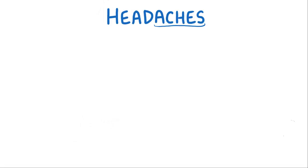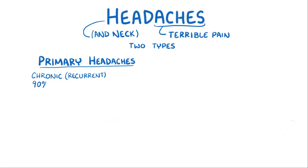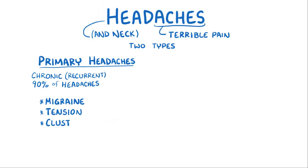Headaches are a type of pain in the head, and they can also be a pain in the neck. There are two main types. The first are called primary headaches, and they're more common. These are chronic or recurrent headaches that account for over 90% of all headaches. Some examples are migraine headaches, tension headaches, and cluster headaches.